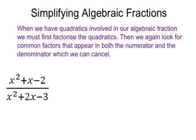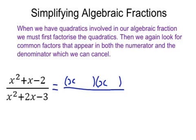In our final example, we have x squared plus x minus 2 on the top and x squared plus 2x minus 3 on the bottom. So we have two quadratics in this algebraic fraction, and we need to factorise both of them. For the top, we use two brackets with x at the front of both, looking for numbers that multiply to make minus 2 and add to make 1. The answers are minus 1 and plus 2, because 2 minus 1 gives plus 1, and minus 1 times 2 gives minus 2.